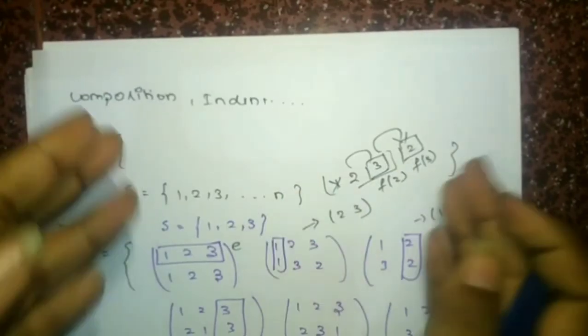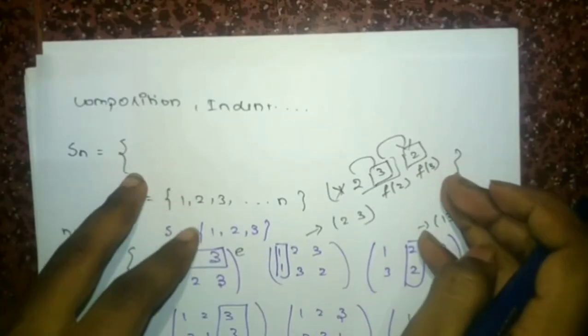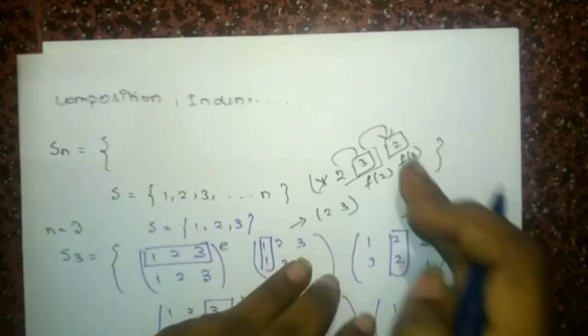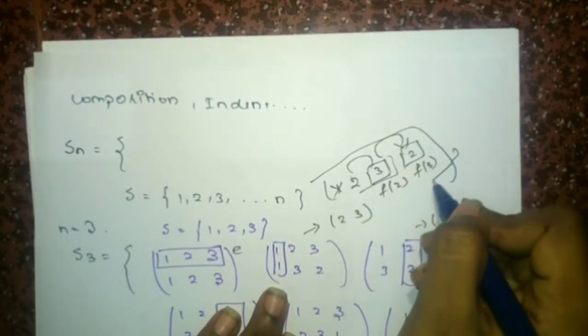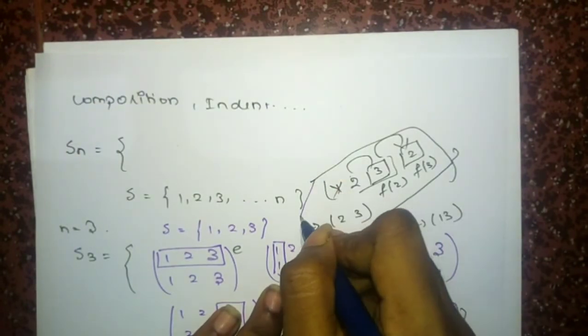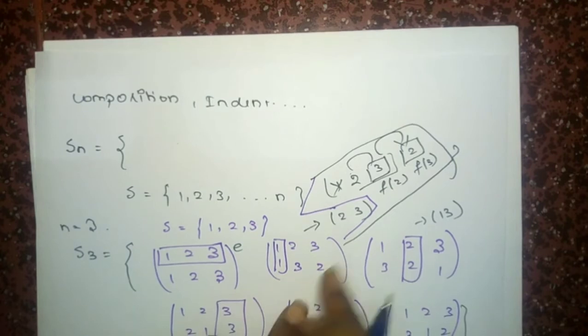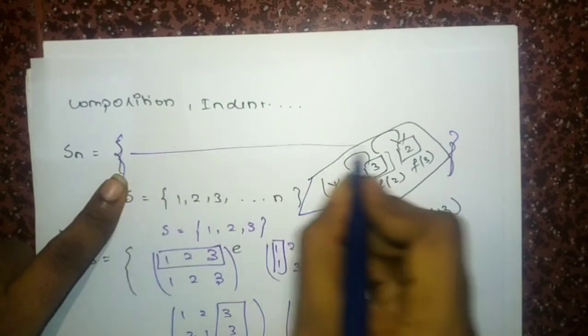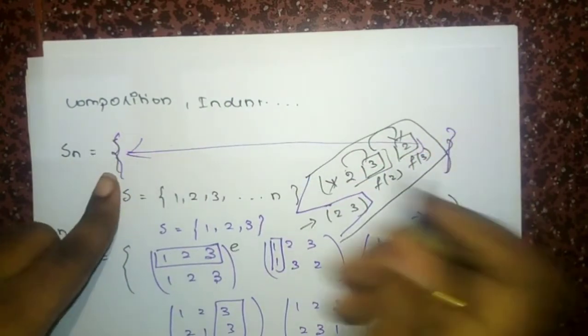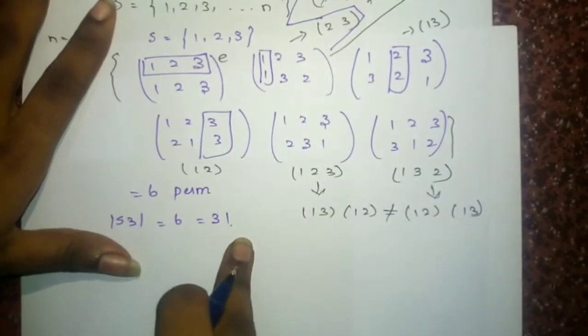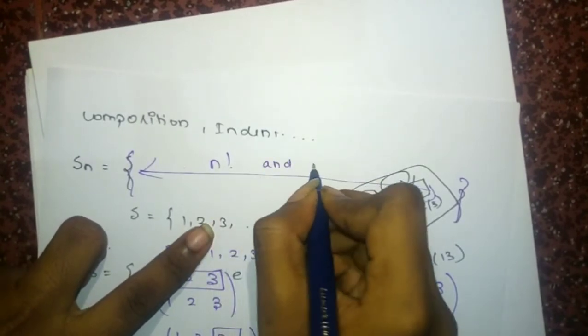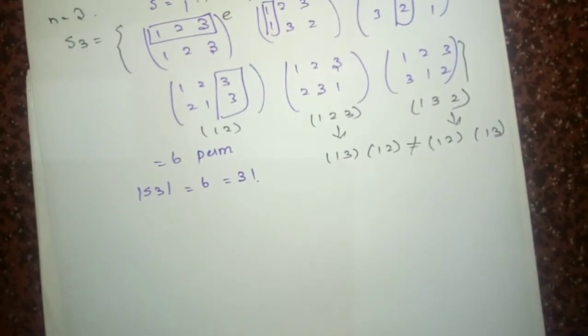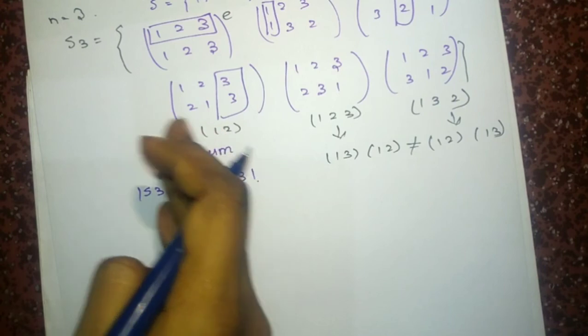SN — the set of elements within this bracket — is part of this. The number of elements within this bracket is n factorial. We have already discussed this is 3 factorial; similarly, n factorial. And the order of SN is n factorial. I think you have understood the topic — the order and how we write the number of permutations.